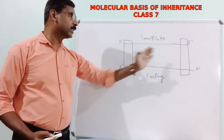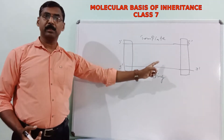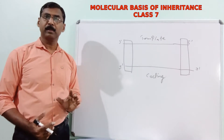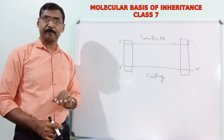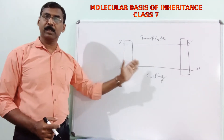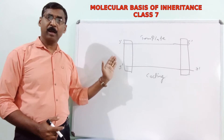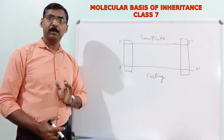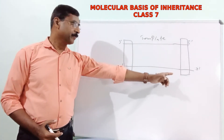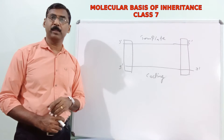In between the promoter region and the terminator region, there is the structural gene, and it is the structural gene alone that transcribes the messenger RNA. The promoter region is required to initiate polymerization of RNA, because the DNA-dependent RNA polymerase enzyme requires this promoter region to initiate polymerization. The terminator region is required to end the polymerization of messenger RNA.